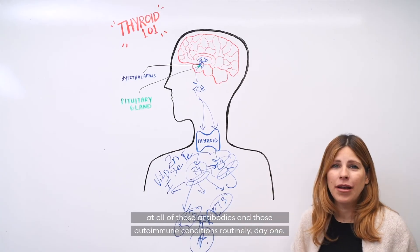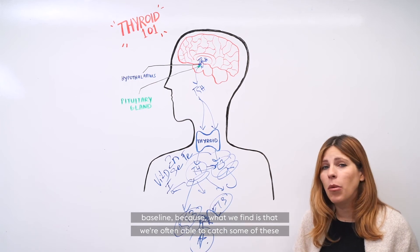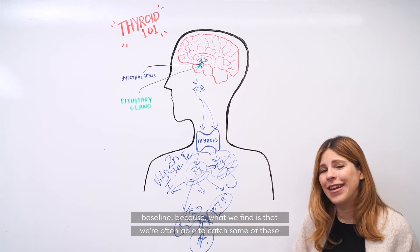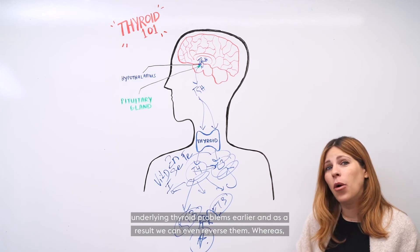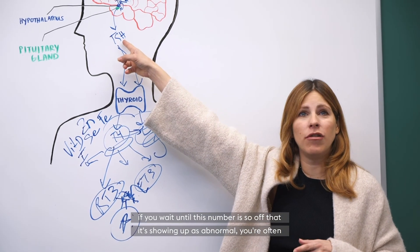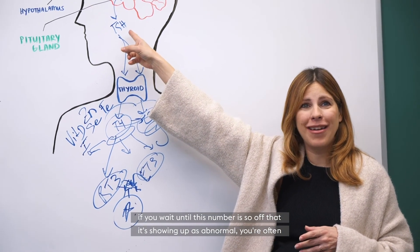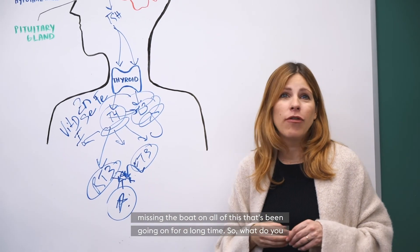We look at all of those antibodies and those autoimmune conditions routinely, day one, baseline, because what we find is that we're often able to catch some of these underlying thyroid problems earlier and as a result we can even reverse them. Whereas if you wait until this number is so off that it's showing up as abnormal, you're often missing the boat on all of this that's been going on for a long time.